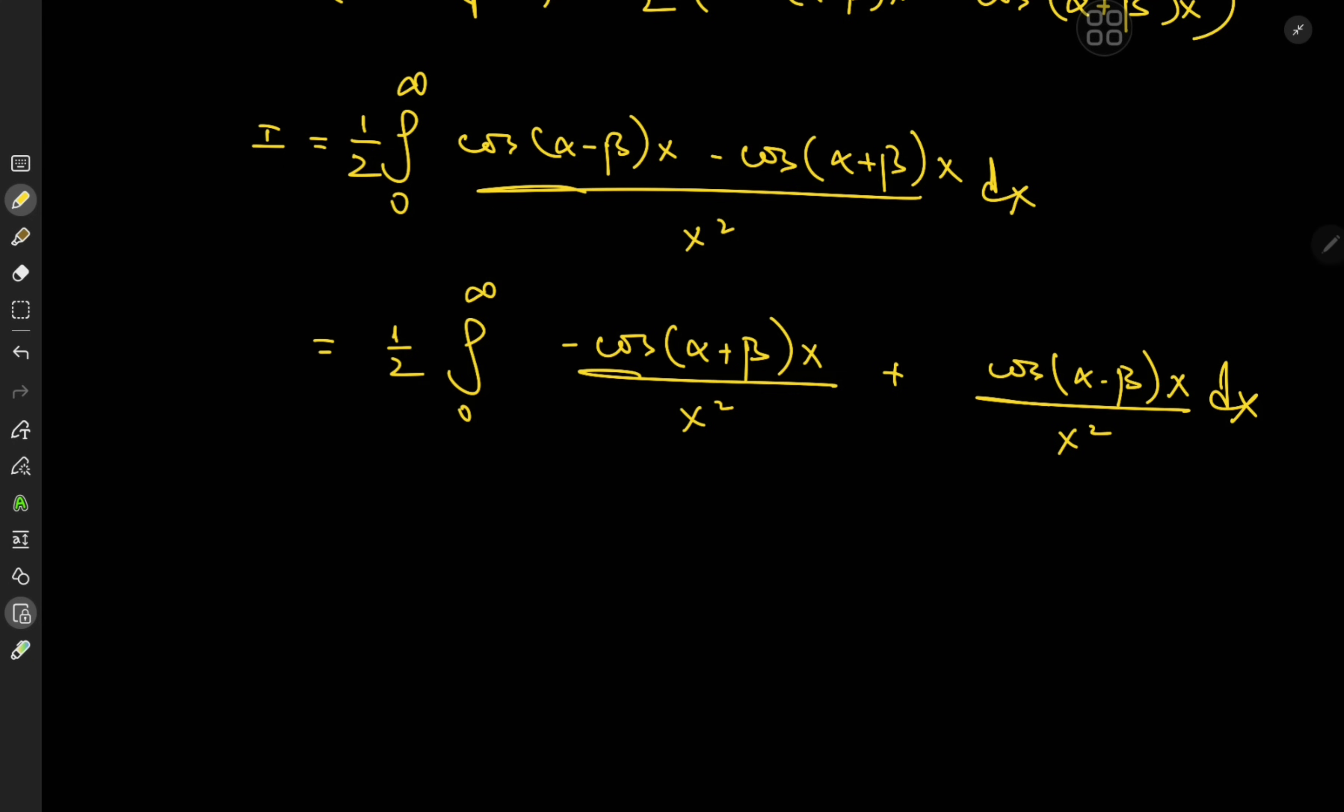We'll write this as one half integral from zero to infinity. Negative cosine alpha plus beta x over x squared plus we have the cosine of alpha minus beta x over x squared. And you guessed it, I need a special form of zero. And the form of zero I'll invoke this time is one over x squared minus one over x squared.